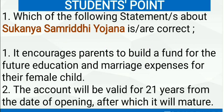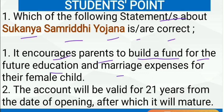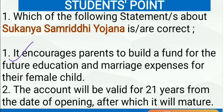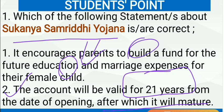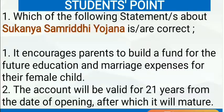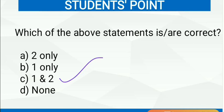The first question: which of the following statements about Sukanya Samridhi Yojana is correct? Sukanya Samridhi Yojana encourages parents to build a fund for the future education and marriage expenses for their female child — this statement is correct. The account will be valid for 21 years from the date of opening, after which it will mature — this statement is also correct. So option C is the right answer.